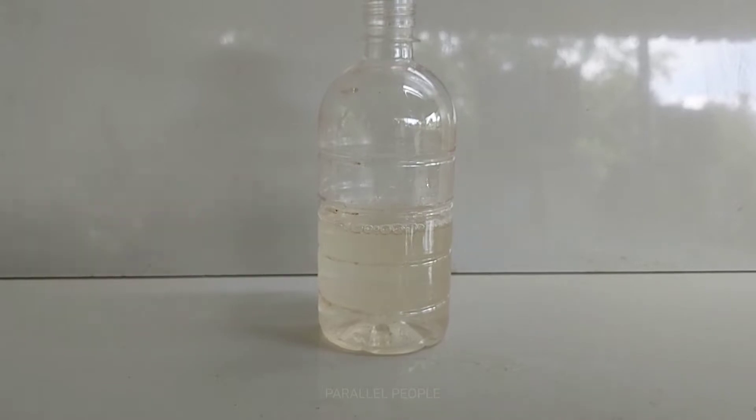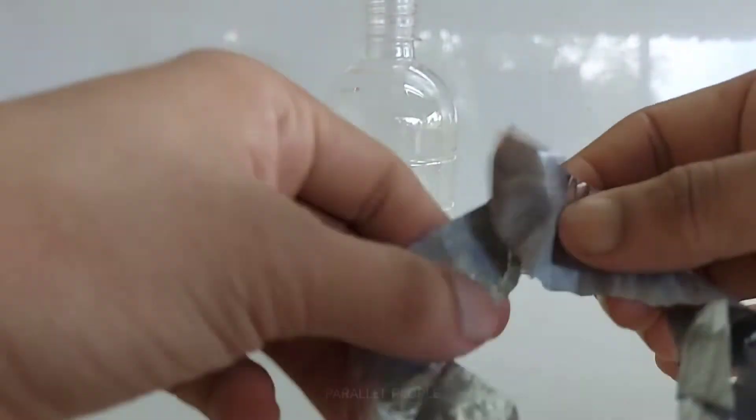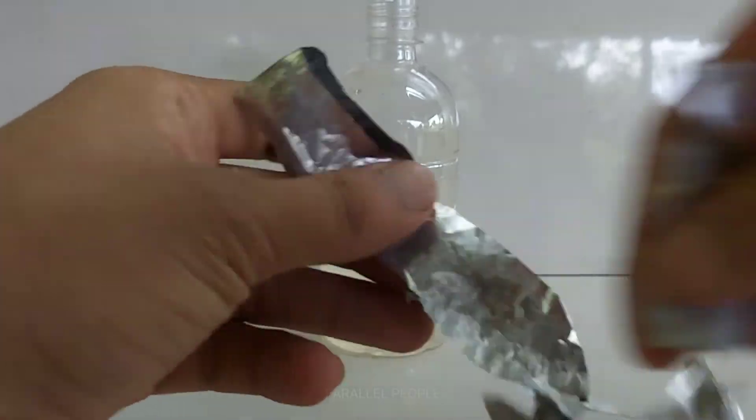Here we are using the reaction between sodium hydroxide and aluminum foil to generate hydrogen. This hydrogen can be collected using a balloon.